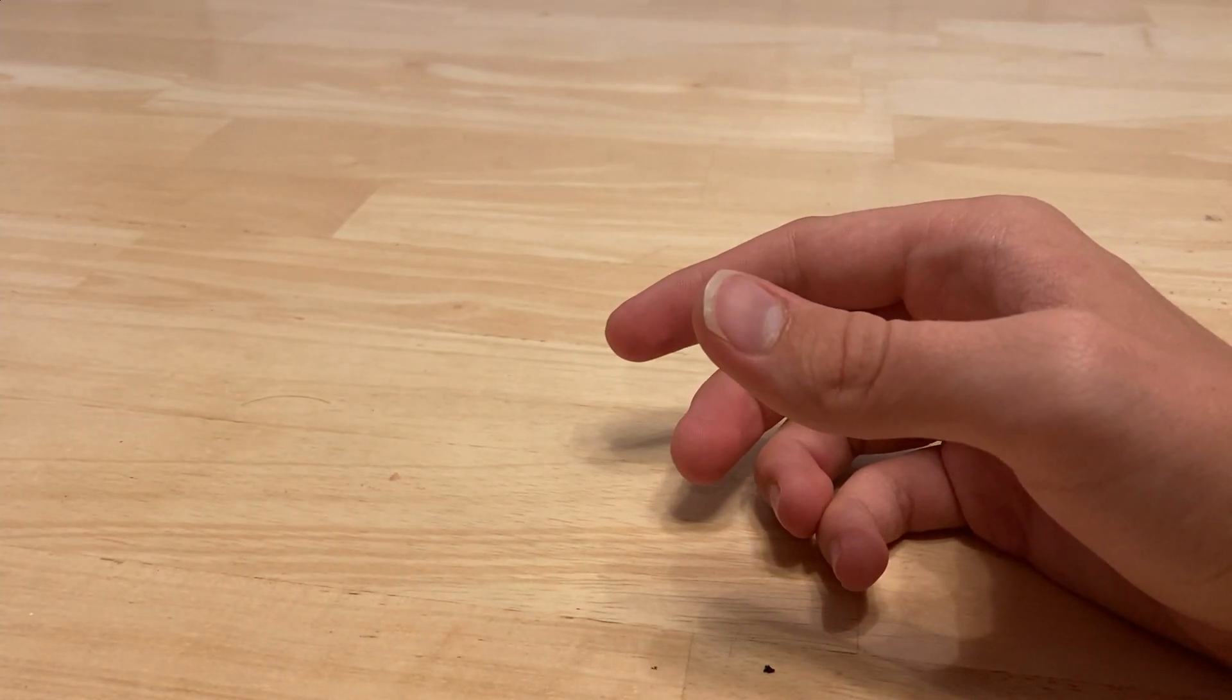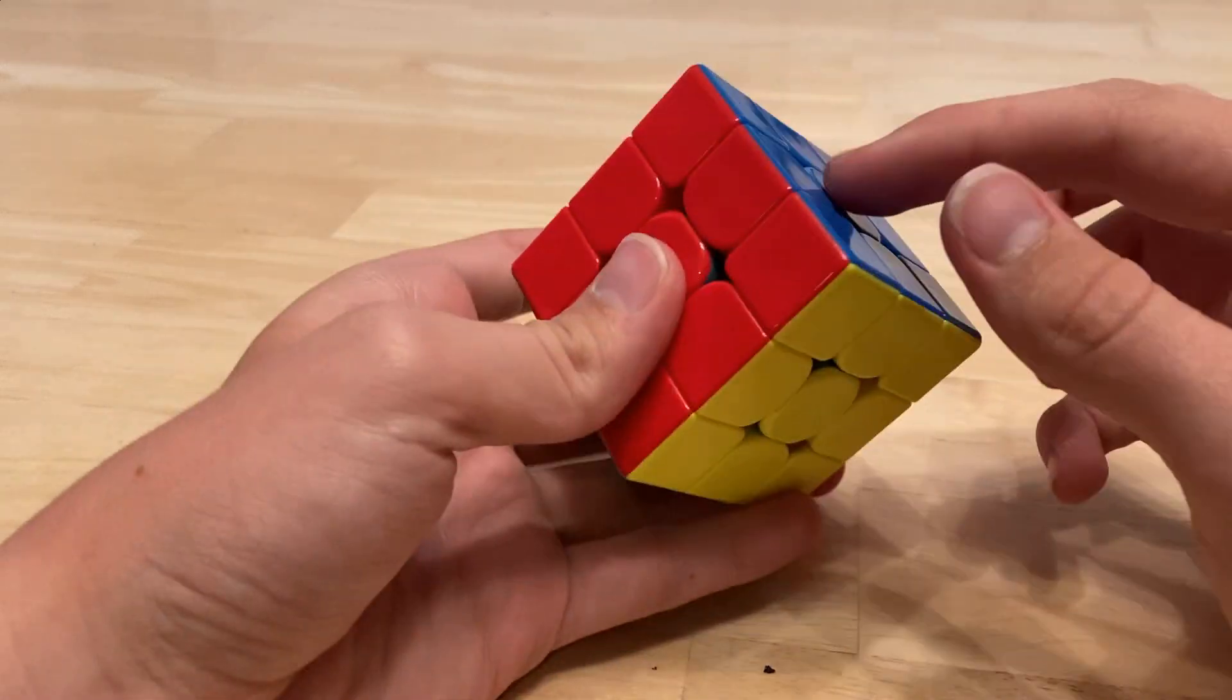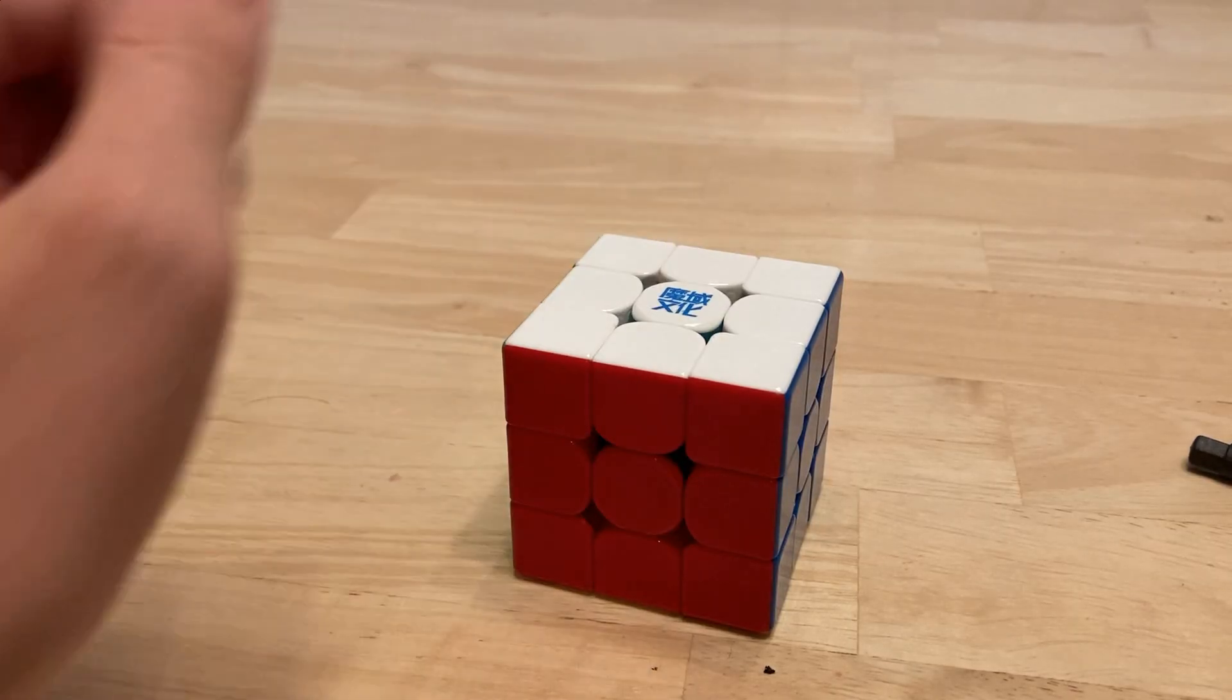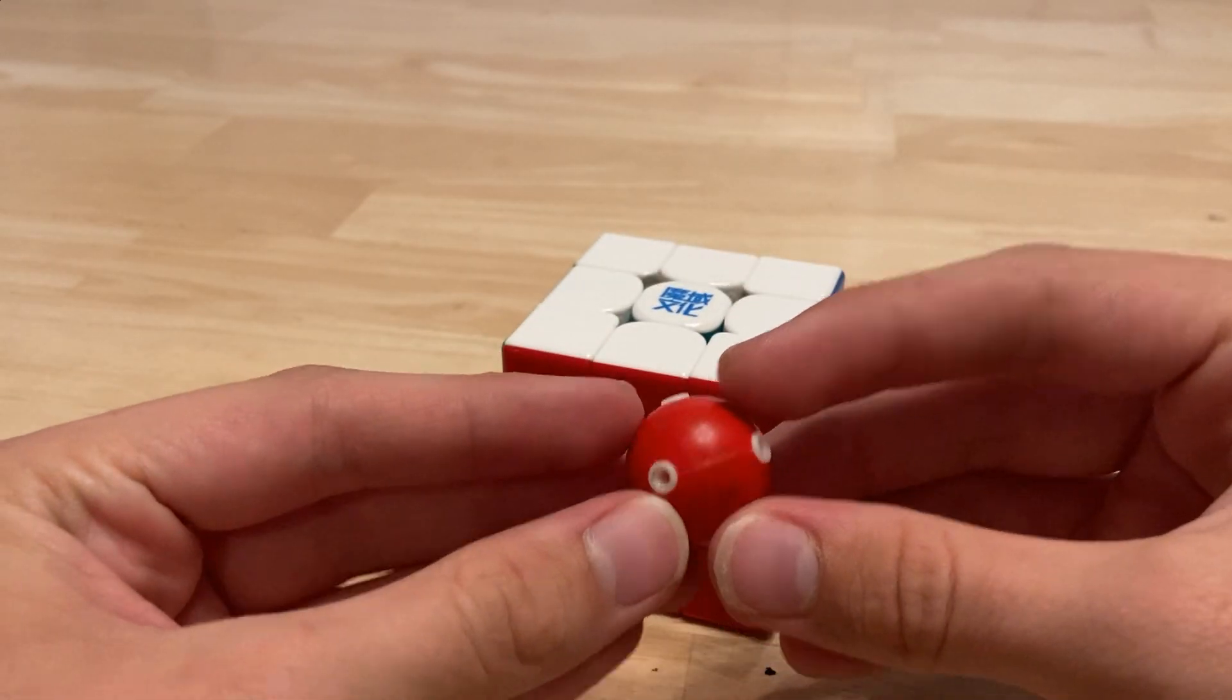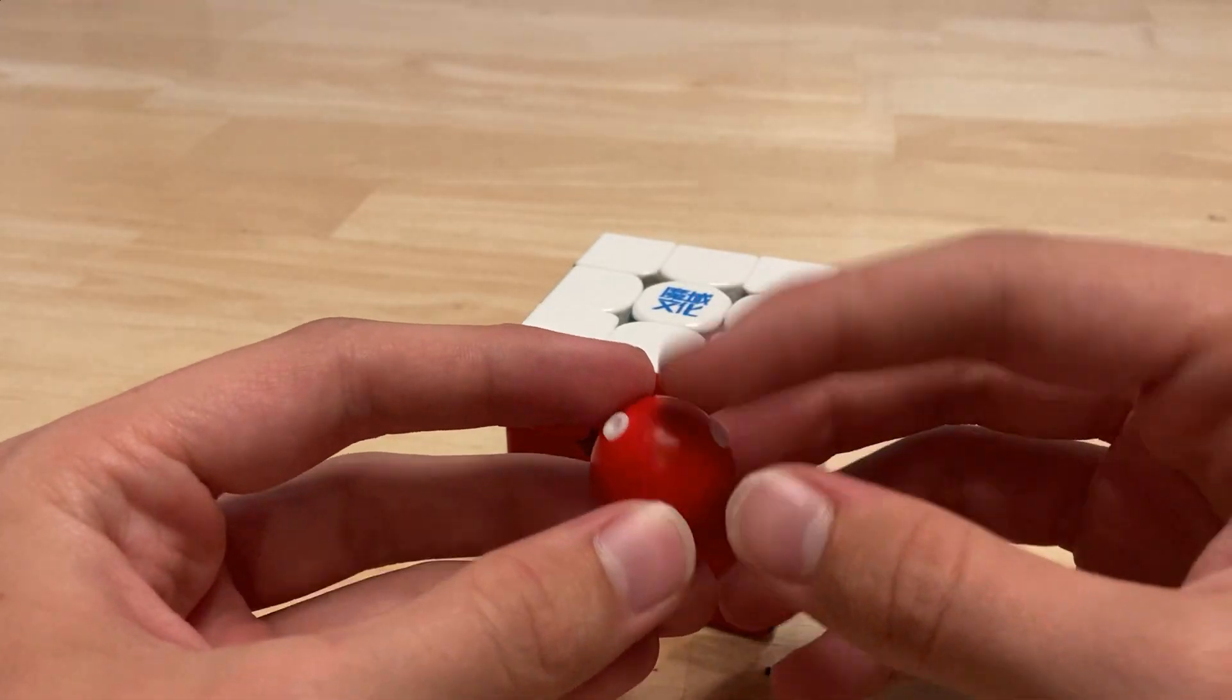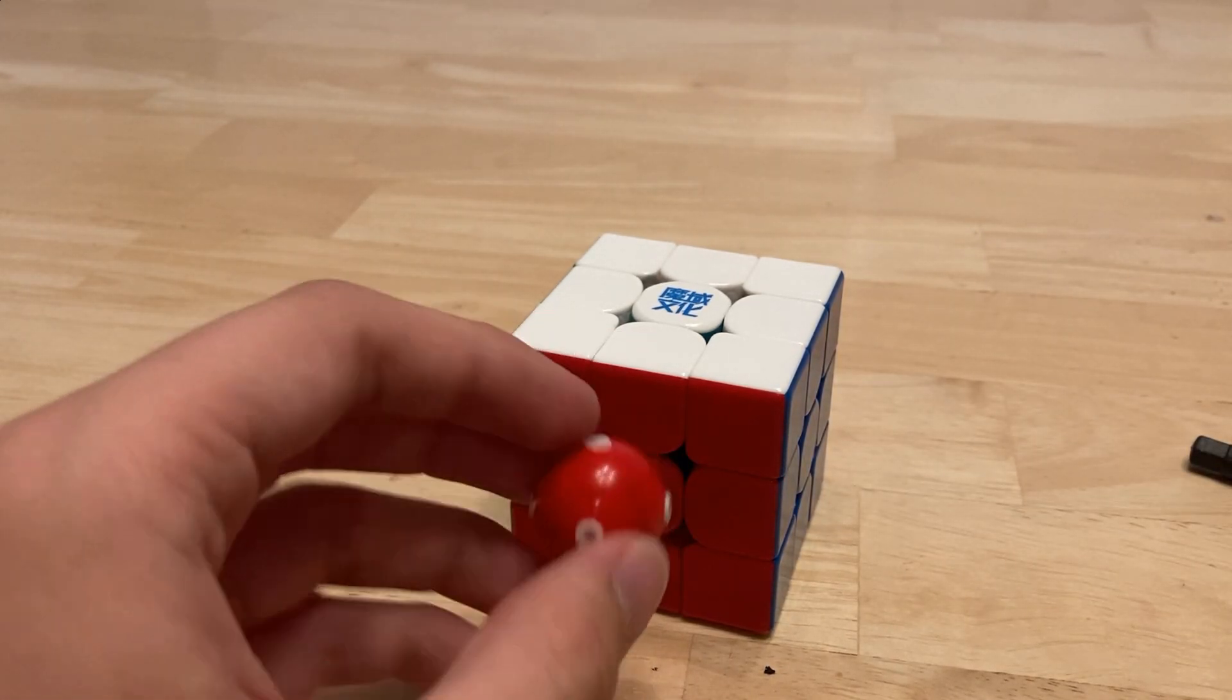For now, you'll need a ball core, an 8-magnet ball core from Moyu. I've tried it with the 20-magnet ball core right here. It just doesn't work as well with the propelling edge magnets. Makes it overturn a little bit, a little too fast.